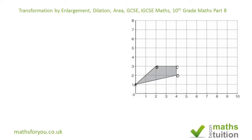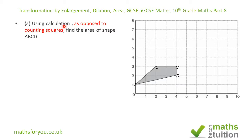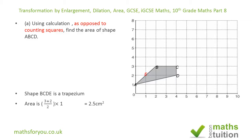The question says: using calculation — as opposed to counting squares — find the area of shape ABCD. To do that, I've introduced a point E, giving two different shapes: a trapezium and a triangle. The area of the trapezium is half the sum of the parallel sides: 3 plus 2 is 5, divided by 2 gives 2.5, times the height.